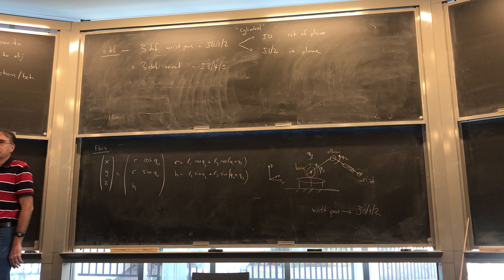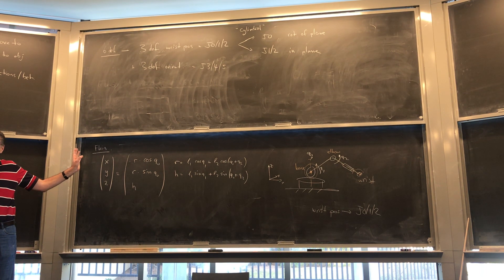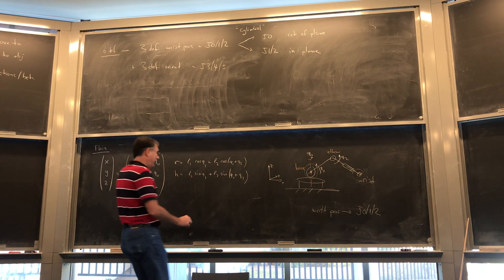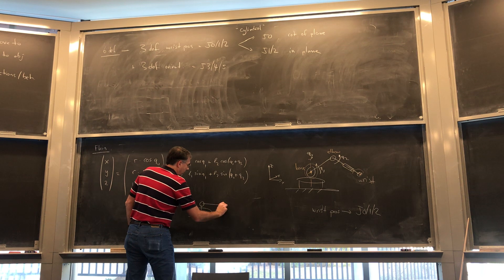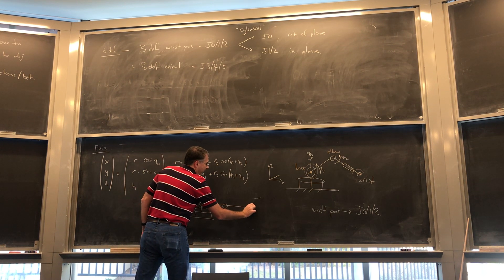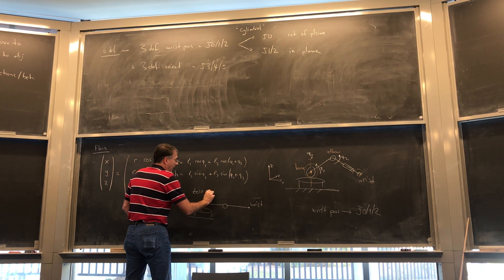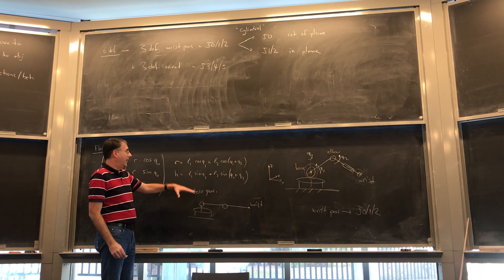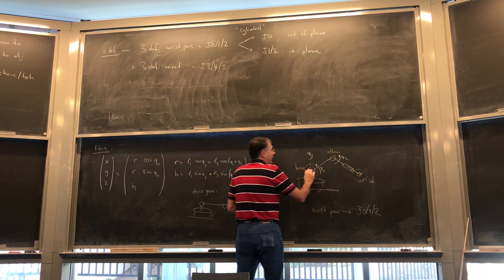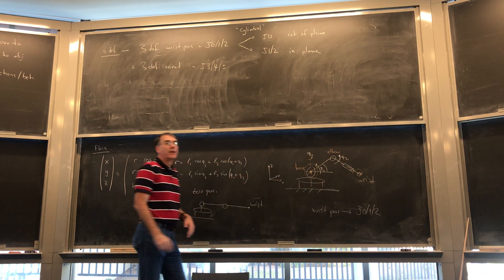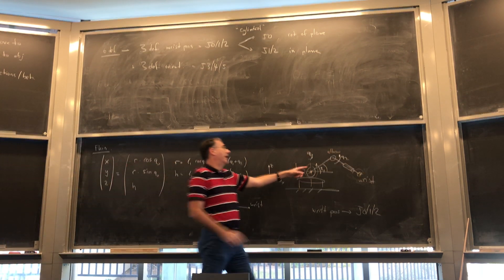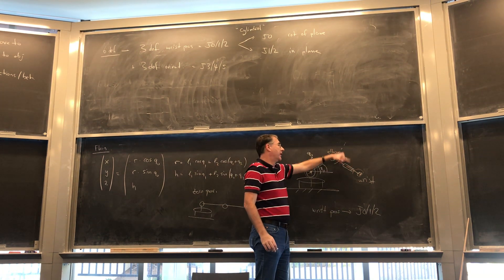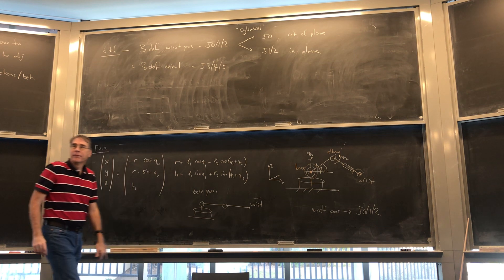Did you guys buy that? Any questions, any thoughts, any confusion? Anyone notice that I didn't define my zero positions? Which isn't actually the omission I've been hinting at. Do you guys agree that basically I define my zero position as that? That way the cosine gives me my horizontal if I define my angle to there. Which means in this picture, Q2 is negative — Q2 is basically measured relative to here, so that's a negative Q2.